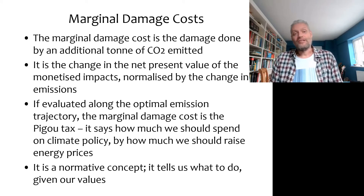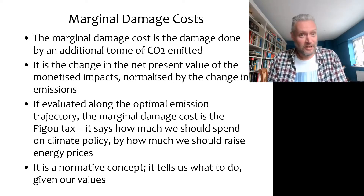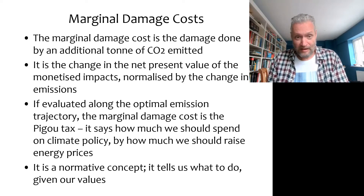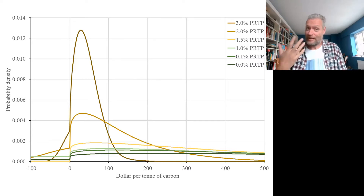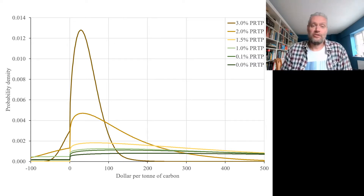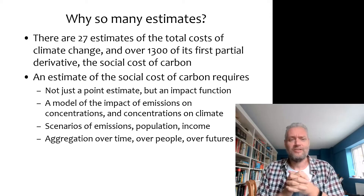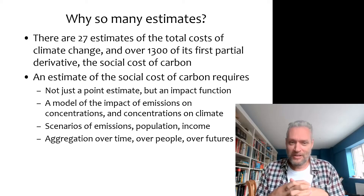Given the centrality of the social cost of carbon in policy debates, it should not surprise you that there have been many estimates of this quantity. In fact, there have been well over 1,300 of these estimates. And that means we can do fancy statistical things like kernel density estimation, as you see here. Now wait — there are 27 estimates of the total cost of climate change, but more than 1,300 of its first partial derivative.